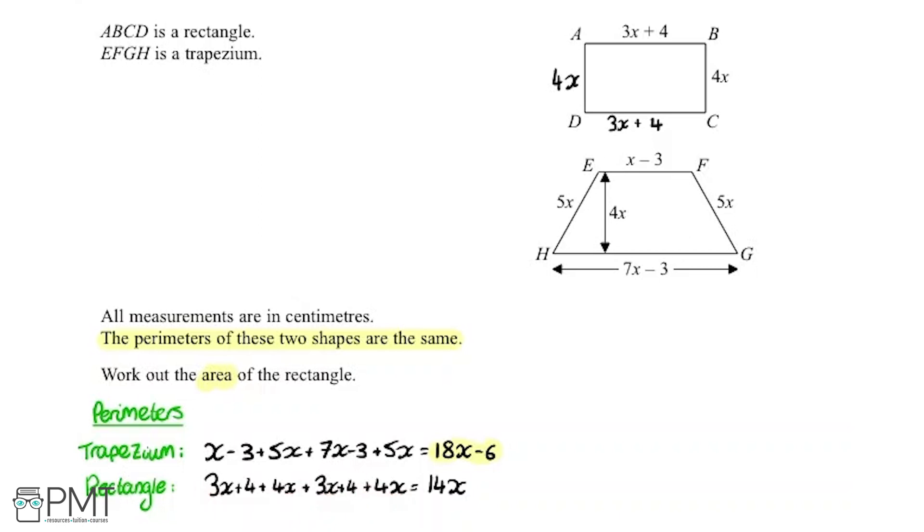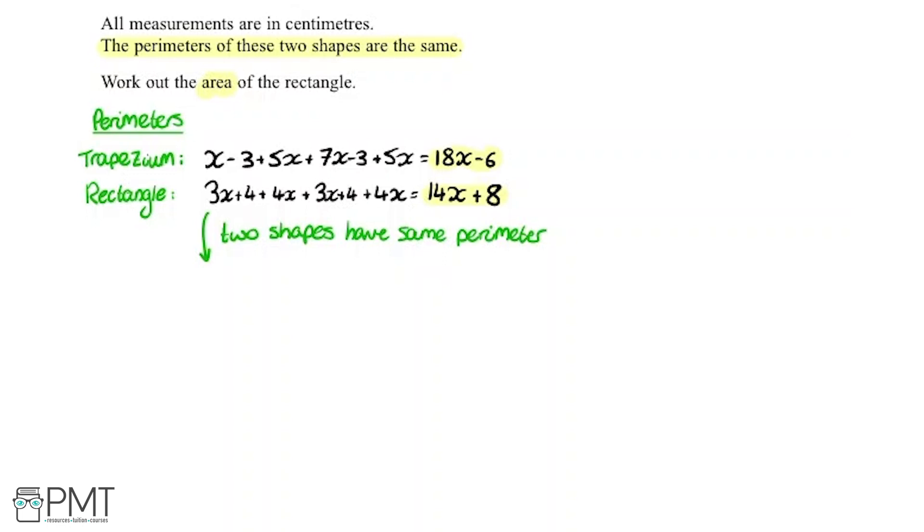And now the constants we've got 4 plus 4, so it's going to be plus 8. Now we're told that the two shapes have the same perimeter. Therefore what we can do is say both of these are equal because both the perimeters are the same. So we can say 18x minus 6 equals 14x plus 8. So now we've got an equation that we can solve.